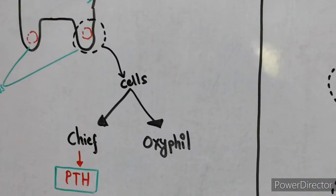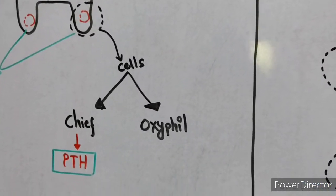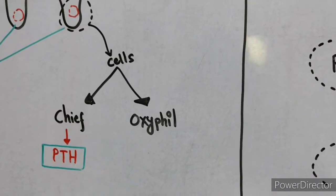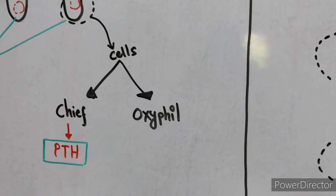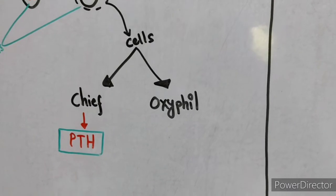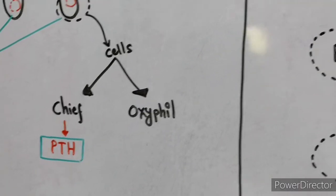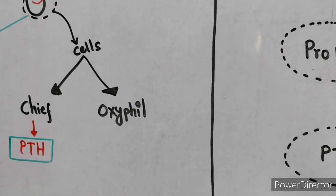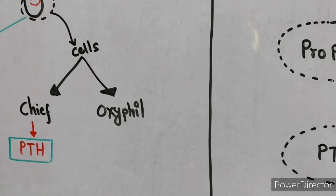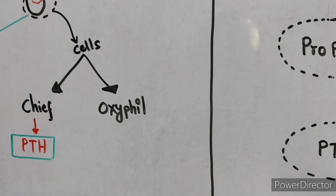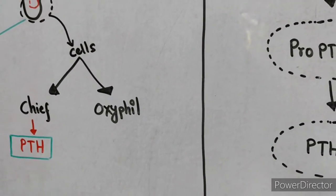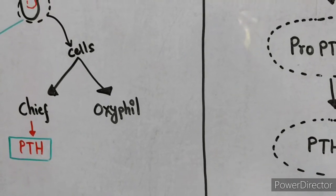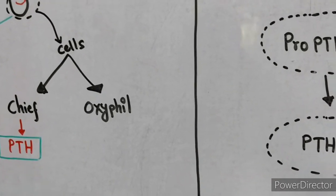The parathyroid gland contains two types of cells: more abundant small chief cells that secrete parathyroid hormone, and less abundant larger oxyphil cells. The function of oxyphil cells is not known, but they are probably modified or depleted chief cells that no longer secrete hormone.